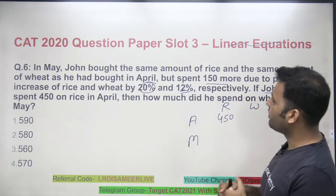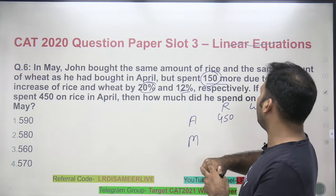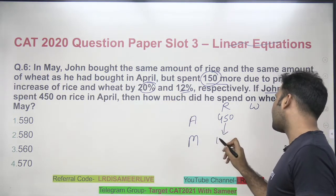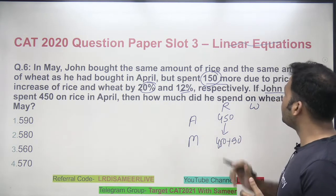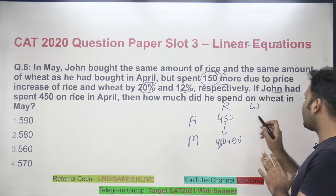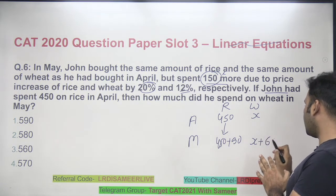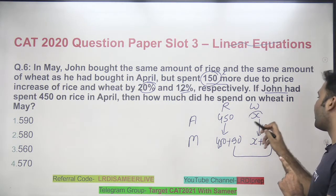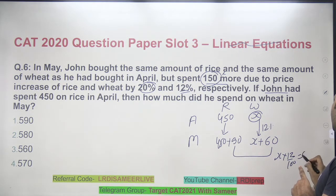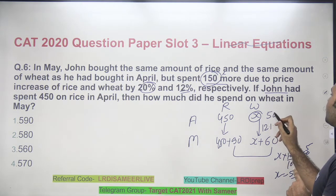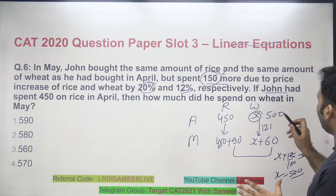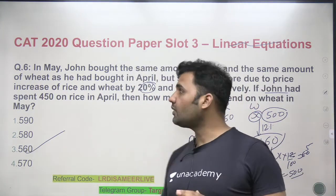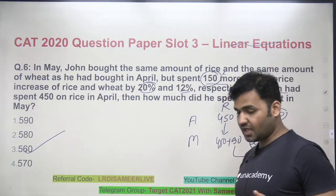If the price of rice increases by 20%, he spends 90 rupees more on rice in May. Since the total extra spending is 150, the remaining 60 must come from wheat. Wheat prices increased by 12%, so 12% of x = 60, giving x = 500. He spent 500 on wheat in April. In May he spends 60 more, so the answer is 560. The third option is correct.